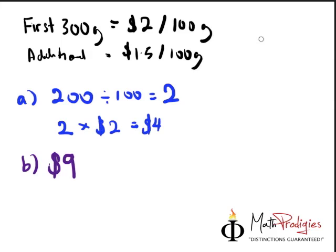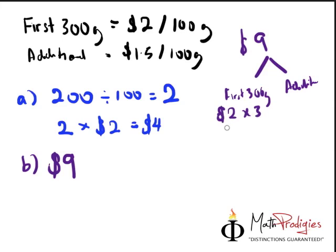$9 can be broken down into what? $9 can be broken down into the first 300 grams. And then, first 300 grams and additional. So for the first 300 grams, it's going to cost you how much? It's going to cost you $2 times 3, which gives you $6. And any additional is going to cost you $1.50 each.